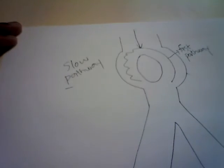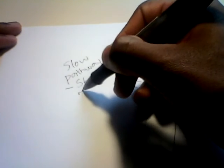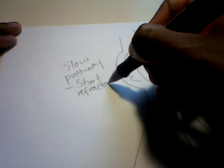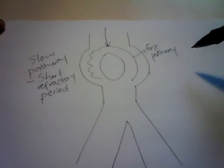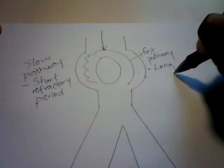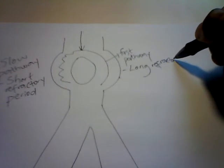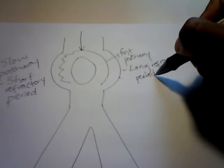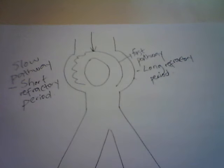For each pathway there's something very important to remember. The slow pathway has a short refractory period, while the fast pathway has a long refractory period. A refractory period is the period during which the tissue is unable to receive another impulse — it cannot be activated.